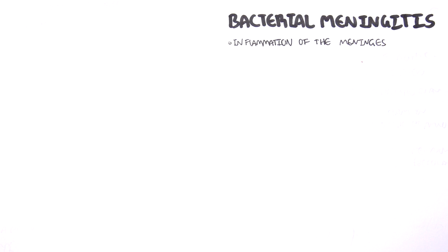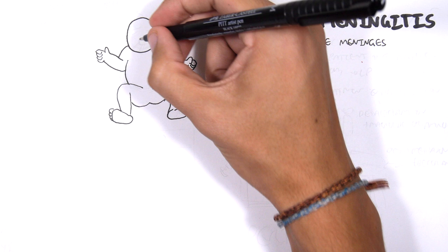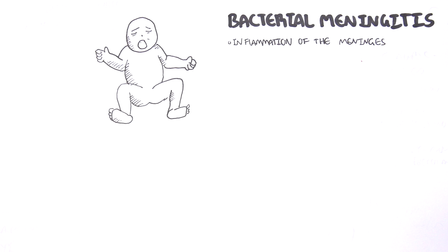One of the complications of sepsis is that the bacteria can go into the brain causing bacterial meningitis. This is the second condition we will look at. Bacterial meningitis is when bacteria cause inflammation to the meninges. There is also viral meningitis, but viral meningitis is often self-limiting. Bacterial meningitis is much more serious.